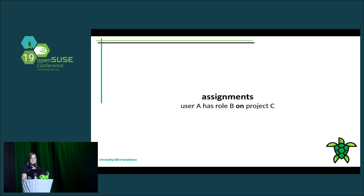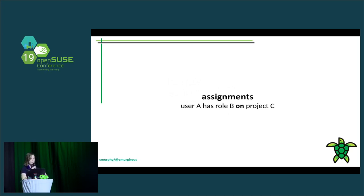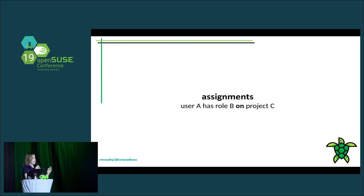Role assignments are what put the two things together. In a non-multi-tenant system, you would just say user A has role B, and that would define globally what they're allowed to do. But OpenStack is different because we have the scope component, so you have to say user A has role B on project C.